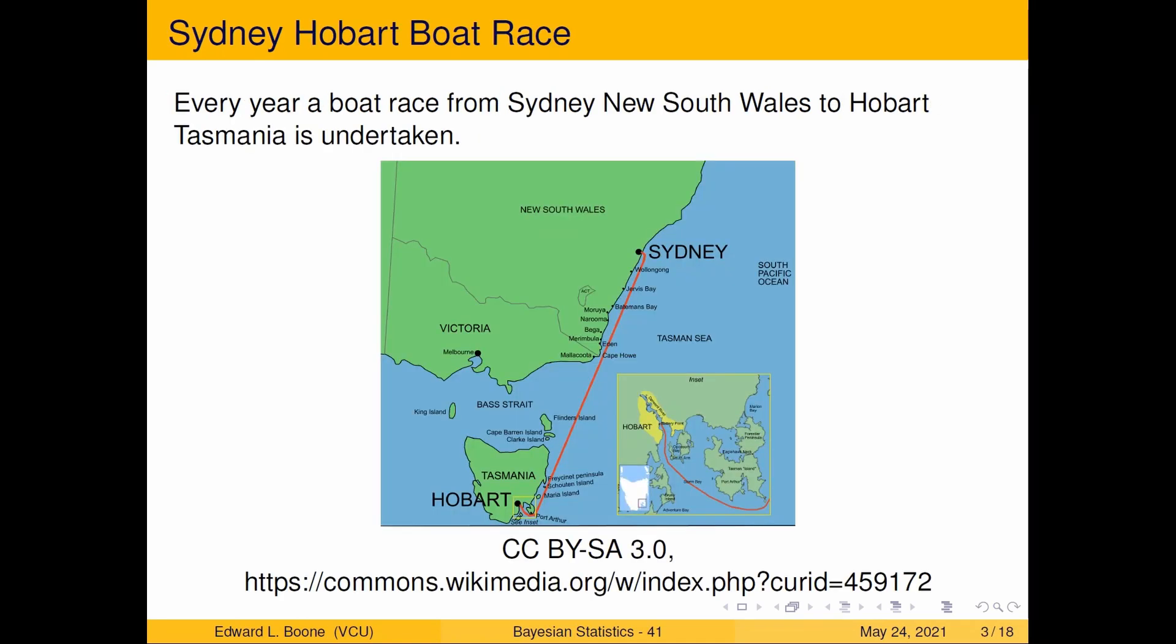And here is our example that we're going to use. I like this example. It's data is freely available. It's the Sydney Hobart boat race. So every year a boat race happens from Sydney in Australia, New South Wales to Hobart, Tasmania.